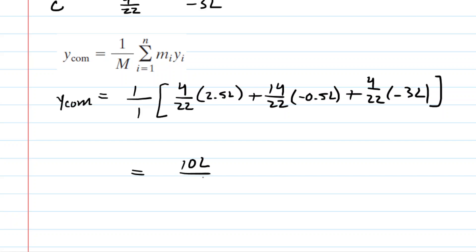Let's simplify inside those brackets. We're going to have 4 times 2.5, which is 10L over 22, minus, let's see, 14 times a negative half, so minus 7L over 22. And then we have a minus 12L over 22. Let's combine the numerators. This gives us negative 9L over 22.